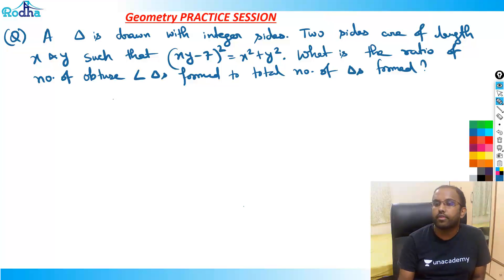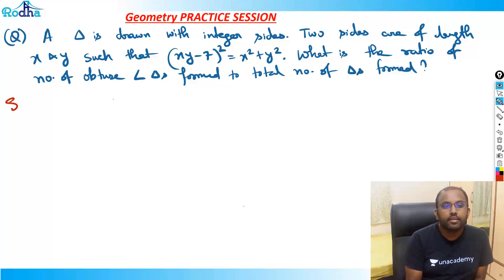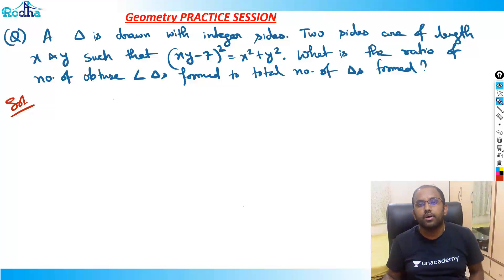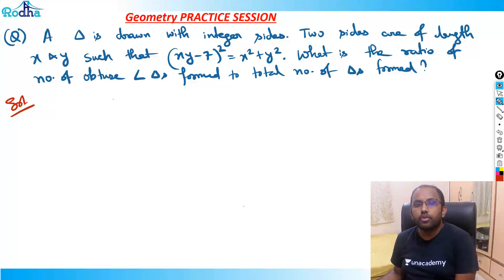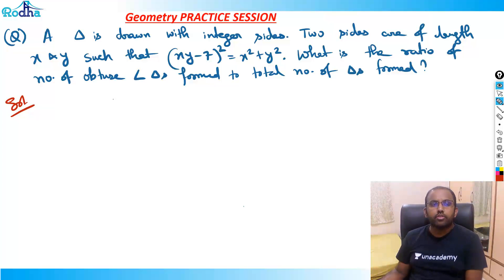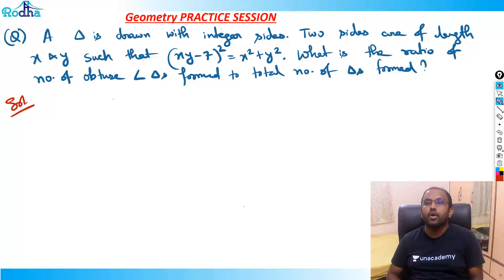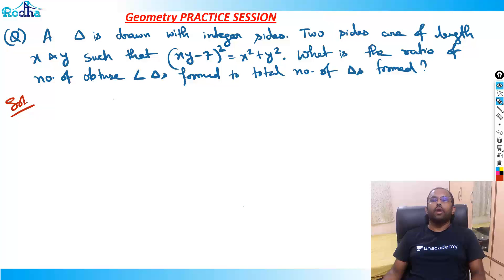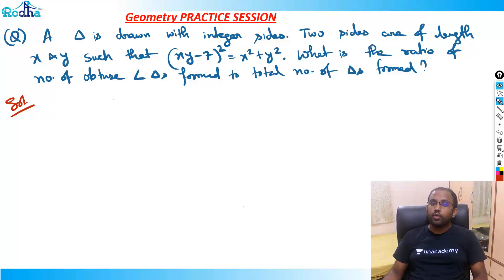Very nice question — just try this question, pause this video and try it. Now, to solve this question: a triangle is drawn with integer sides where two sides are X and Y such that (XY - 7)² = X² + Y². What is the ratio of the number of obtuse angle triangles formed to the total number of triangles formed?